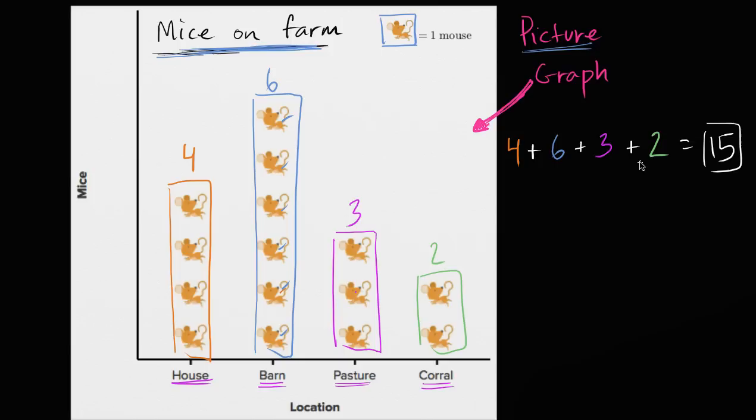Fifteen total mice on the farm. So once again, picture graph. Just a way to show data, to show information. This tells us how many mice are in each part of the farm.